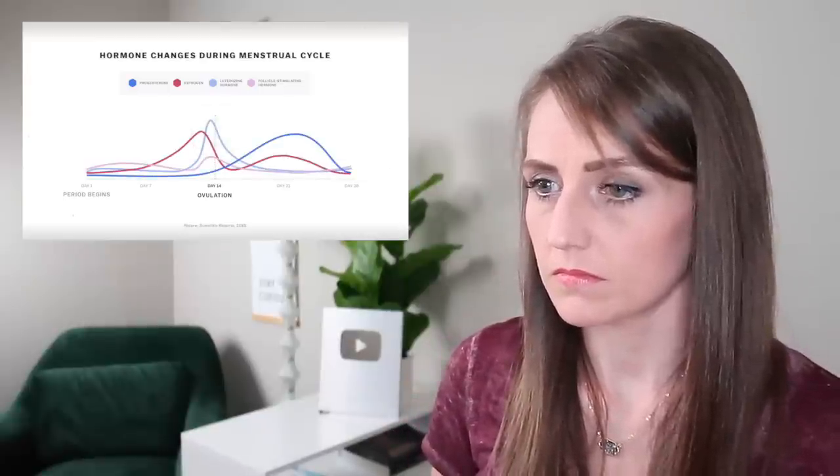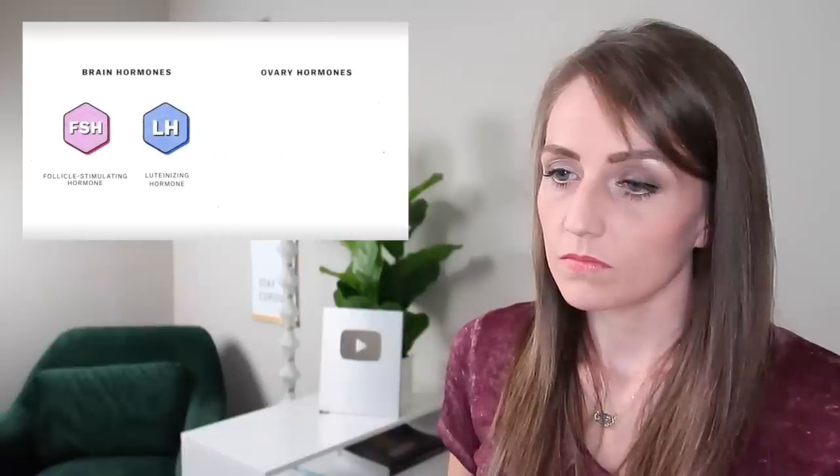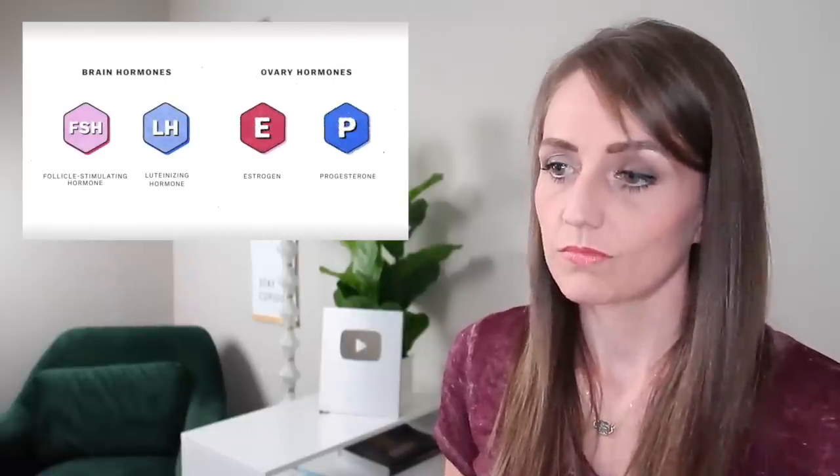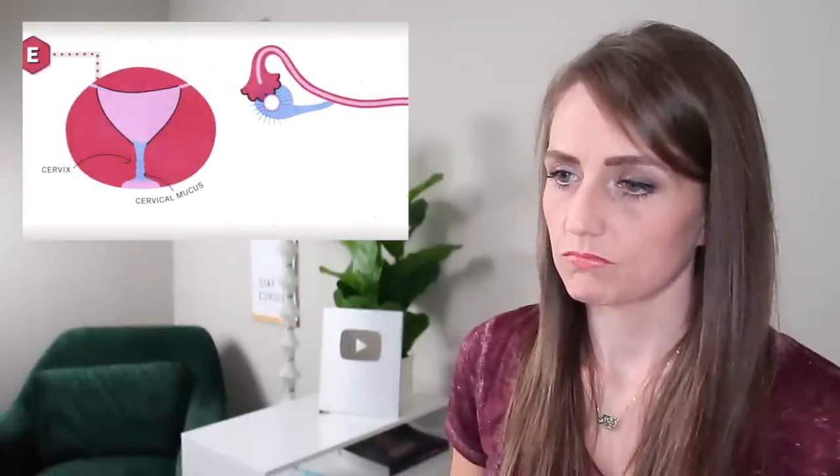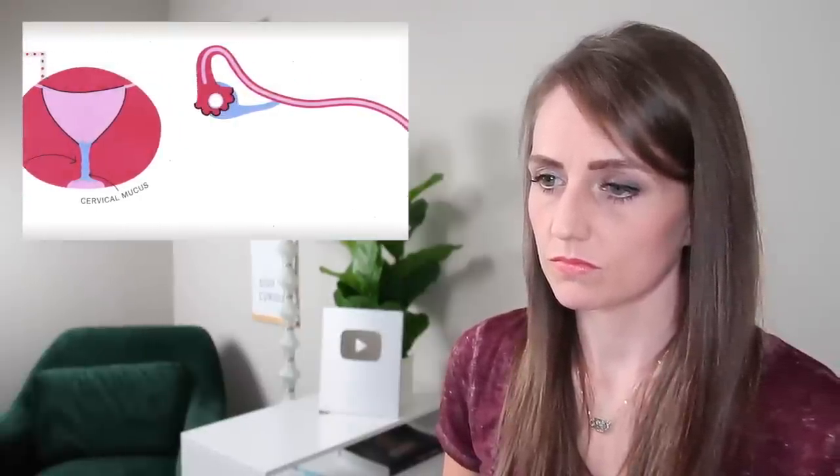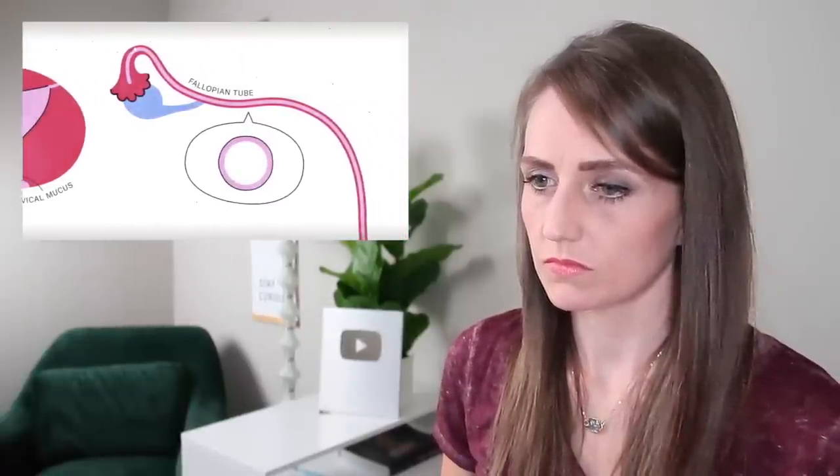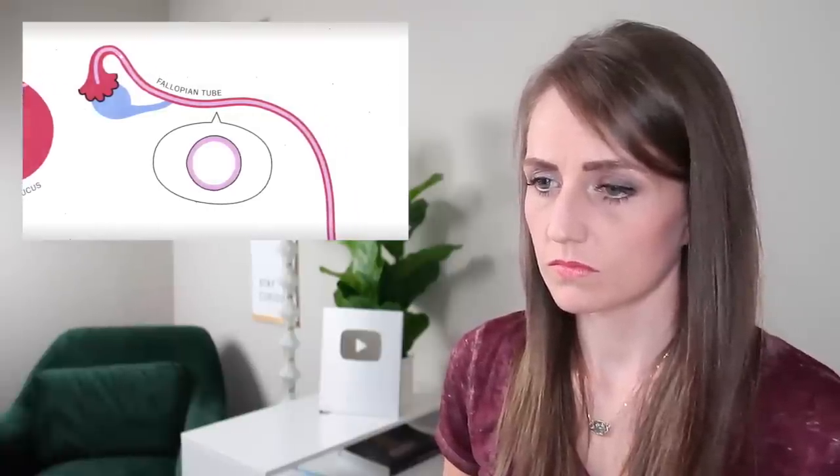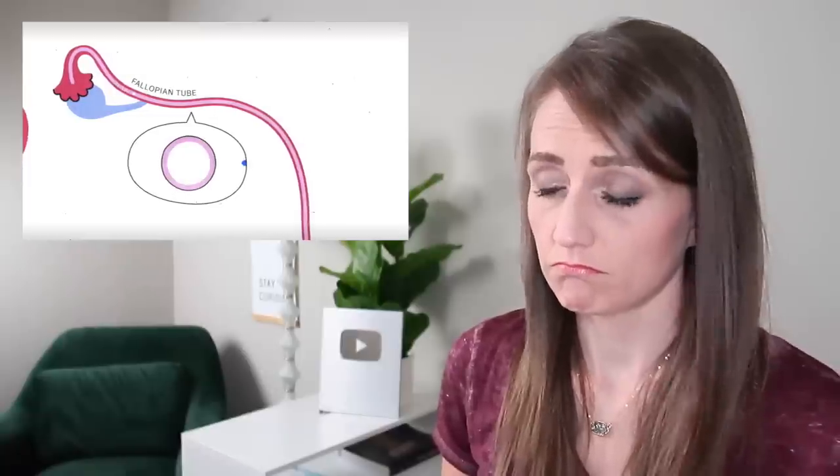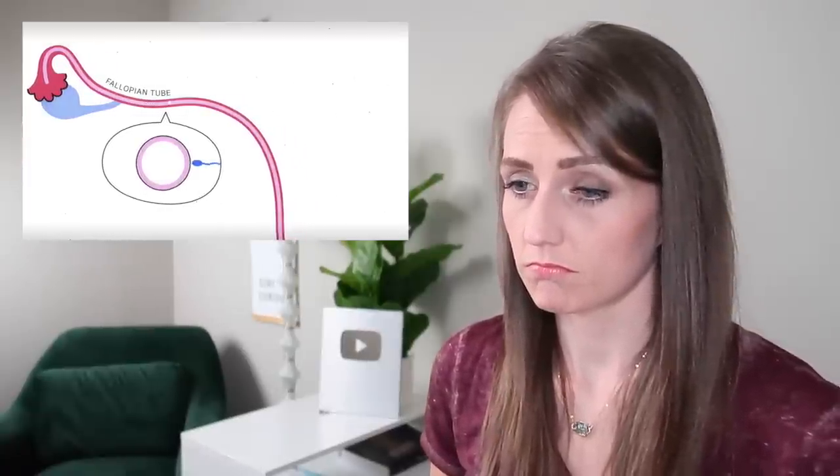Which rise and fall over the course of a month. Two of them are released from the brain and two come from the ovaries. Estrogen and progesterone. Then the follicle ruptures, releasing the matured egg, which is snatched up by the nearby fallopian tube. The sperm has a short window of time to get to the egg or it dies off. But if one gets there, that's fertilization.